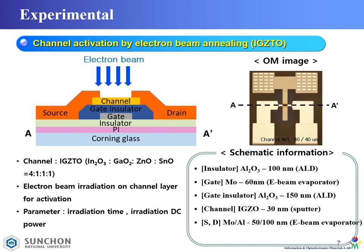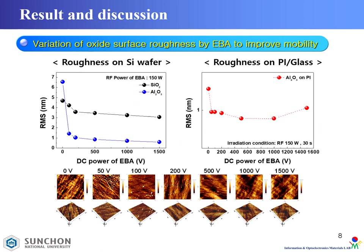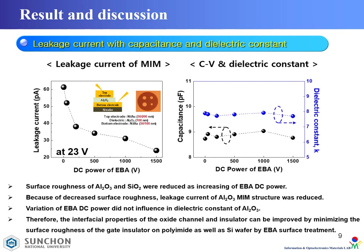Then we control the irradiation DC voltage. This shows the variation of oxide surface roughness by DC power of E-beam. The surface roughness was reduced as E-beam DC power increased. MIM structure was also fabricated for measuring electrical properties by electron beam annealing. Leakage current is reduced as DC power of E-beam increases.